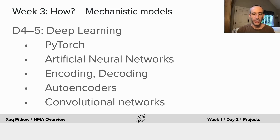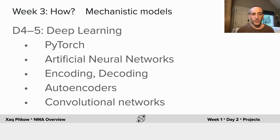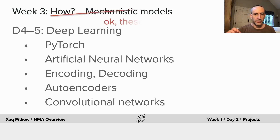The last two days will be dedicated to deep learning — a very popular technique to describe nonlinear relationships that you can learn. We'll base our work on PyTorch, a programming framework for building and training neural networks. We'll think about artificial neural networks, how information is encoded and decoded from them, and autoencoders, which put those two together. One example you'll look at is convolutional networks, where the network performs the same operations at all places in space — a popular approach to image processing because images have similar statistics across space.